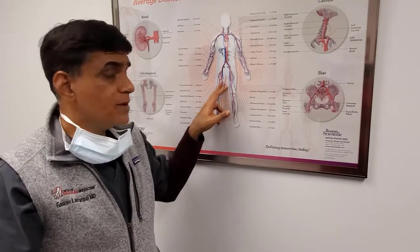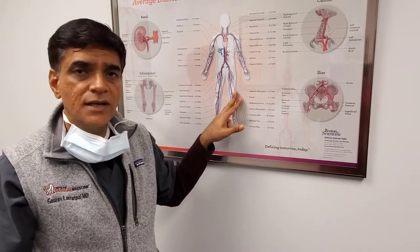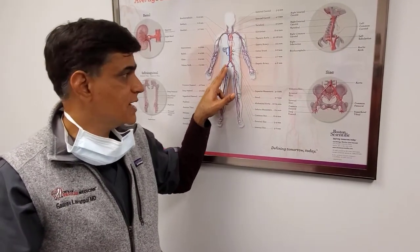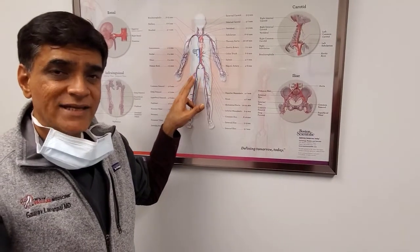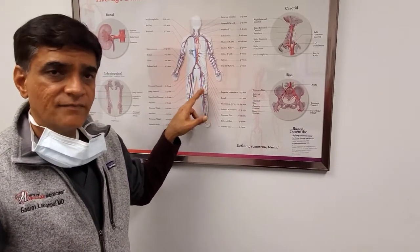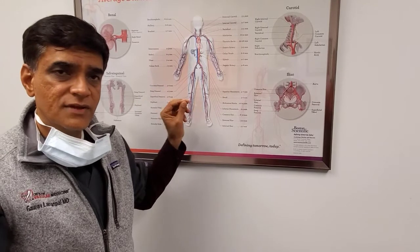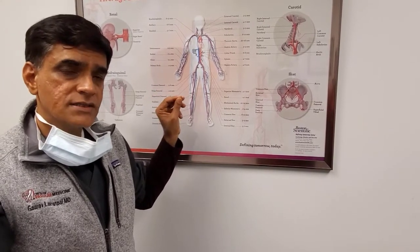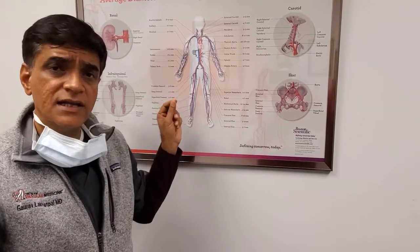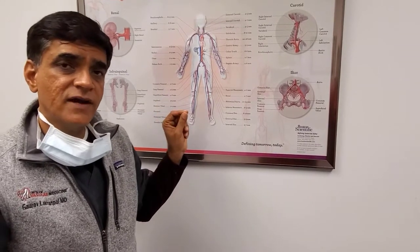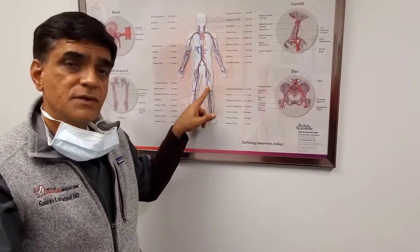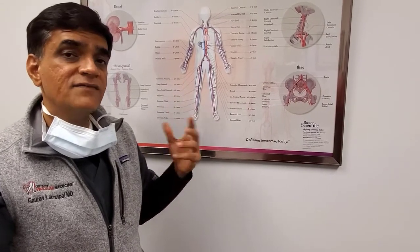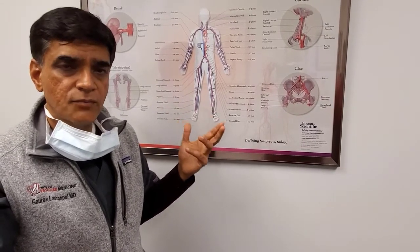To open up the blockages, we have a procedure called an angiogram which basically involves shooting dye or putting dye into these arteries and identifying where the blockage is. Sometimes we will put in an ultrasound catheter through the blockage once we are able to cross it. Then we have our cleaning devices called atherectomy devices to help clean out as much of the blockage, put in a balloon to stretch the blockage out, and if needed, putting in a stent.